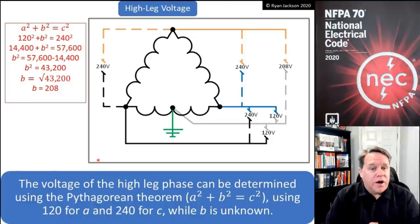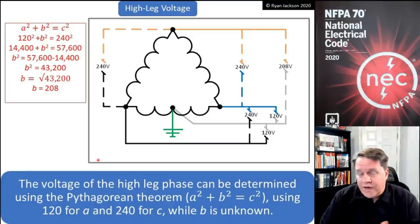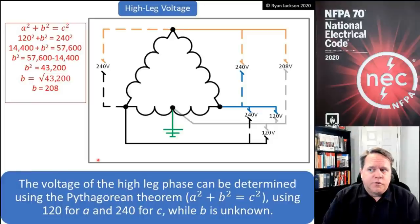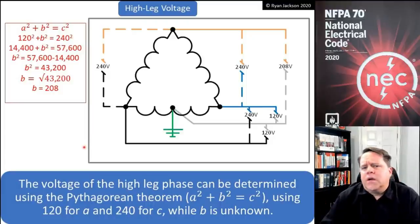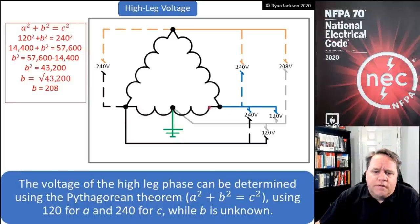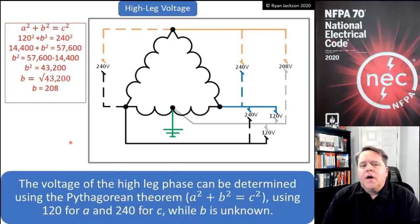If we have a Delta connected transformer we can connect it in three different ways. We can have an ungrounded system, where the transformer windings are not connected to earth at all — those are pretty rare. We could also have a corner grounded system, where we take a corner, pick a phase, and connect it to earth and the metal parts. Or we can have a high leg system, which is where we take the middle of one of the phases and connect it to earth and also to the metal parts, and that creates a neutral point.